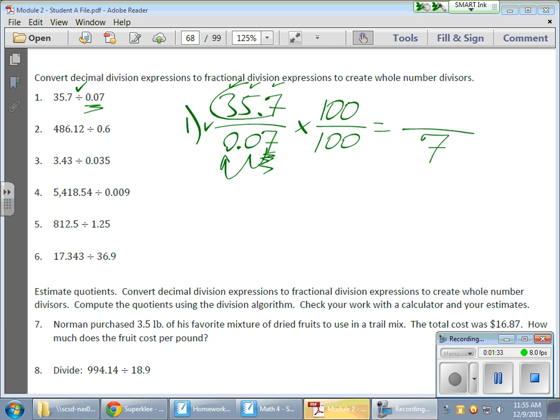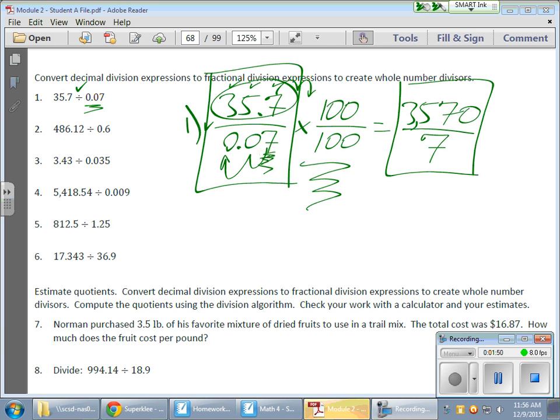This guy over here, everything's going to gain two place values as well. So, I'm going to wind up with 3,570. That's a great thing. Now, what's up with this guy compared to this guy? They're actually equivalent. And why? Because I multiply by 100 over 100.